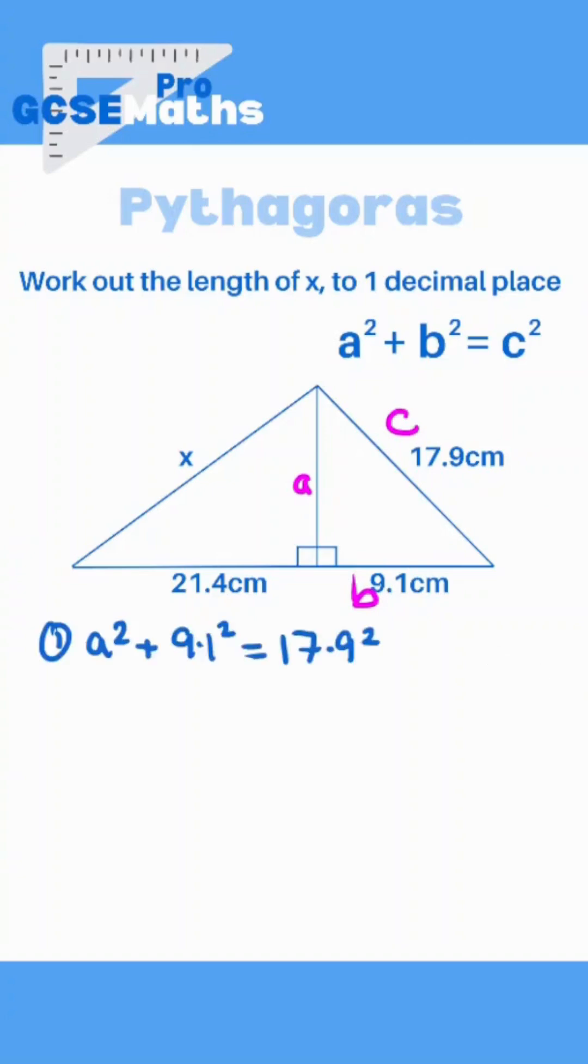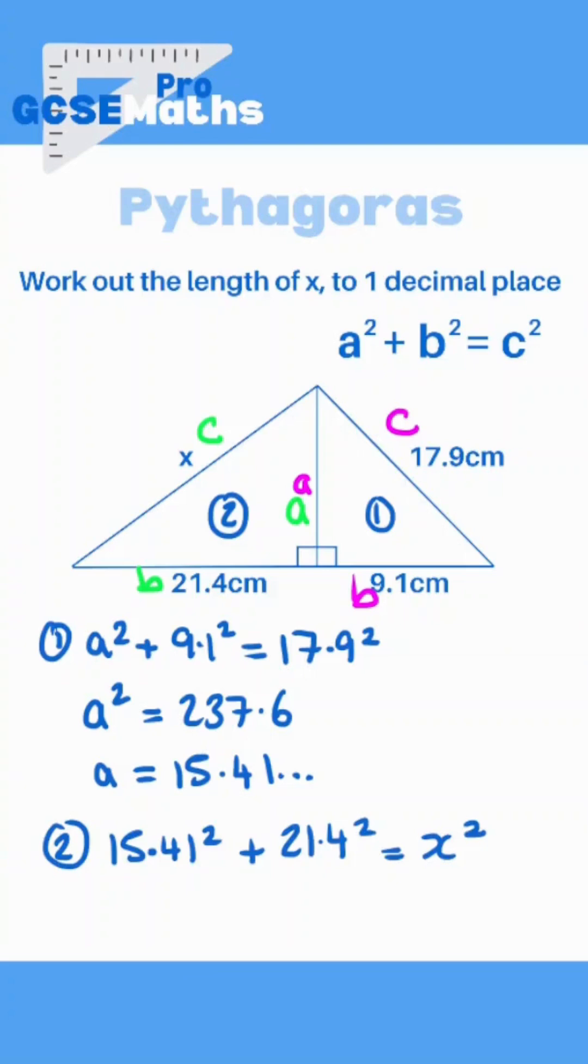Now I need to rearrange this to solve to find A. So again I need to label the triangle correctly. Now again we're going to fill in that same formula. And now I just need to solve it to find x. So to one decimal place my answer is 26.4cm.